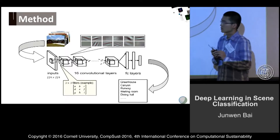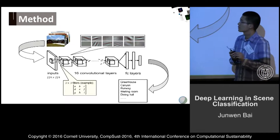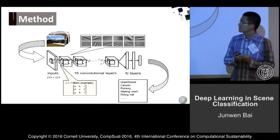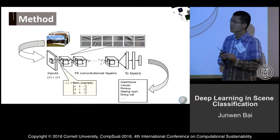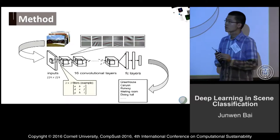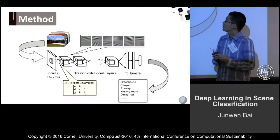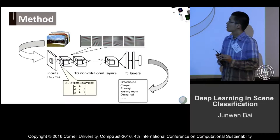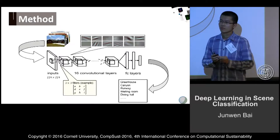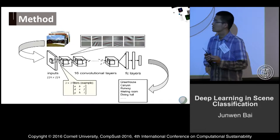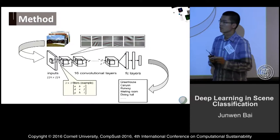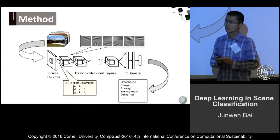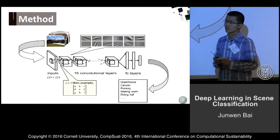The first 16 layers are convolutional with filter size 3, and then the following three layers are fully connected, whereas the last layer is a softmax layer with 401 channels, since there are 401 different scene categories in total.